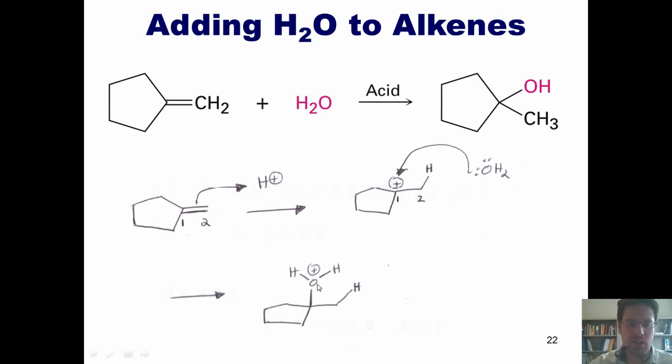This oxygen is, of course, still in possession of a full octet. It's only positively charged because oxygen doesn't like having three bonds. When a second molecule of water comes in, electrons grab that hydrogen, push these electrons up into that positively charged oxygen to quench its charge, and gives me the final product. It also generates, in the process, hydronium, H3O+, which can serve as the source of H-plus in the next catalytic cycle.